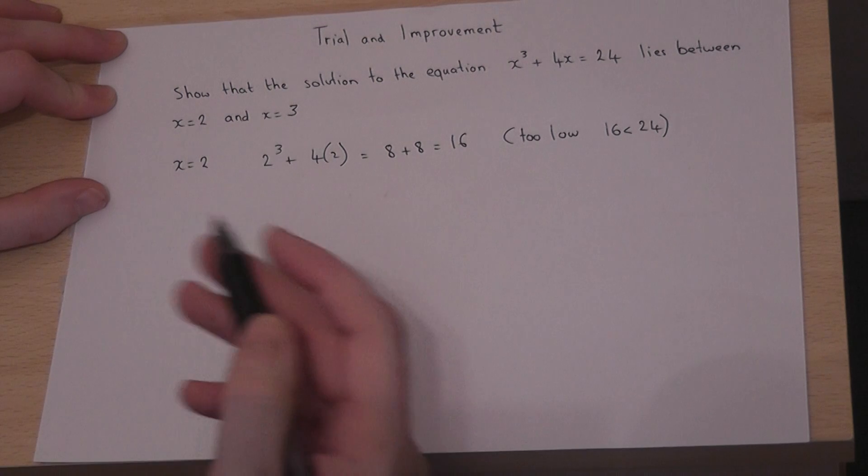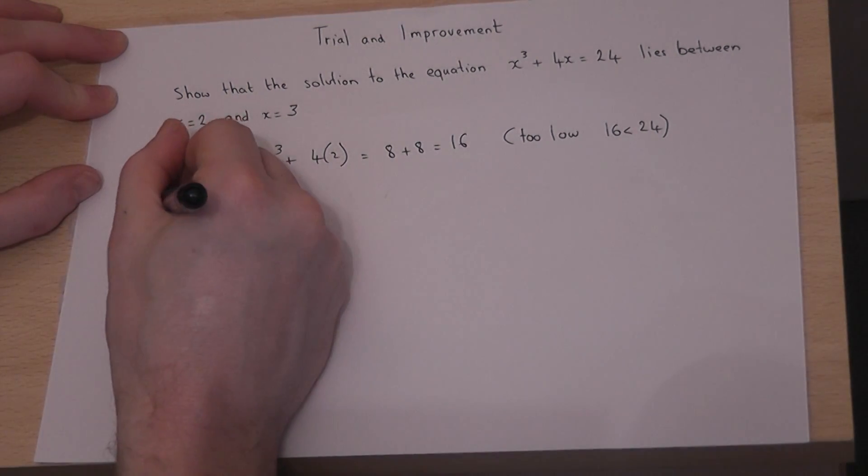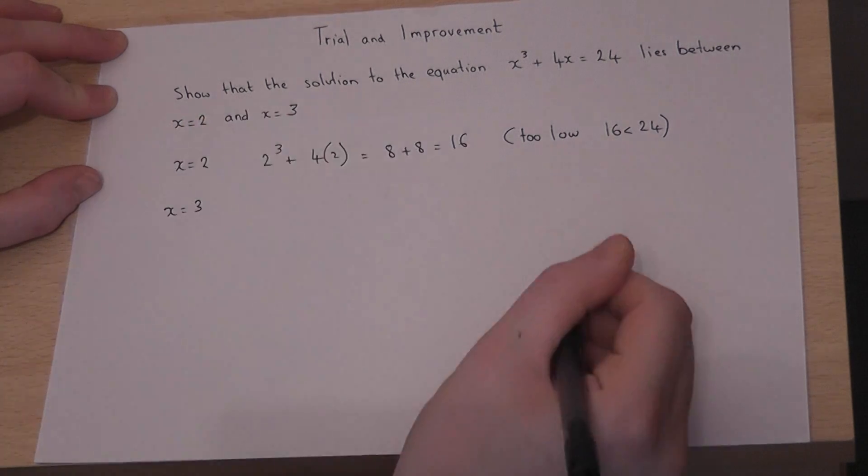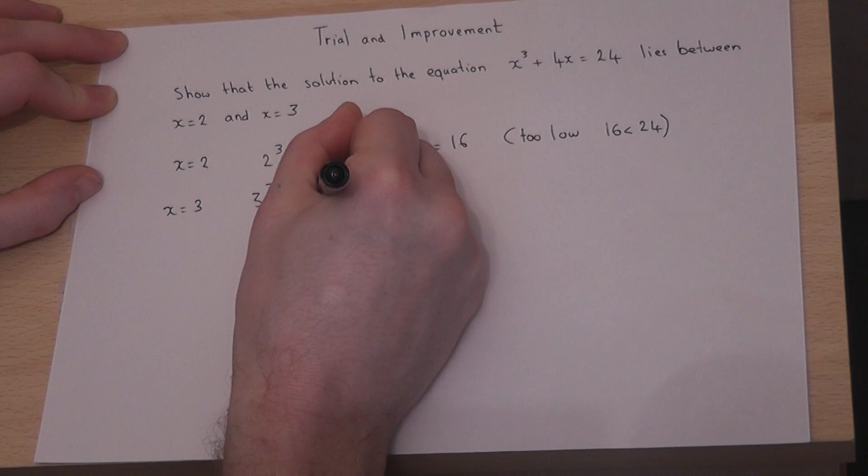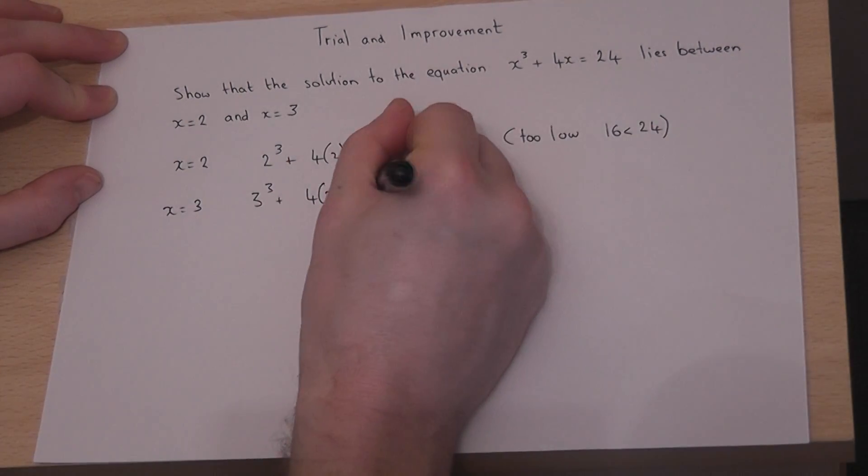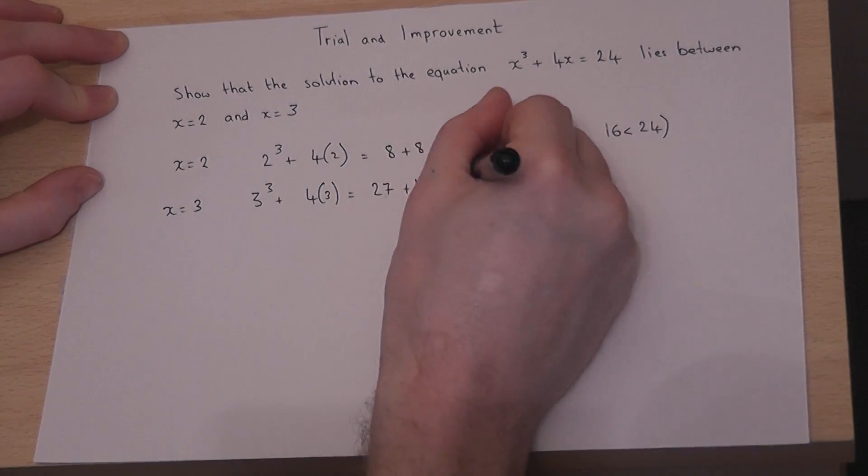We assume the solution probably lies above x equals 2, so let's put x equal to 3 in as well. 3 cubed plus 4 times 3. Well, 3 cubed is 27, 4 times 3 is 12. Add them together: 39.